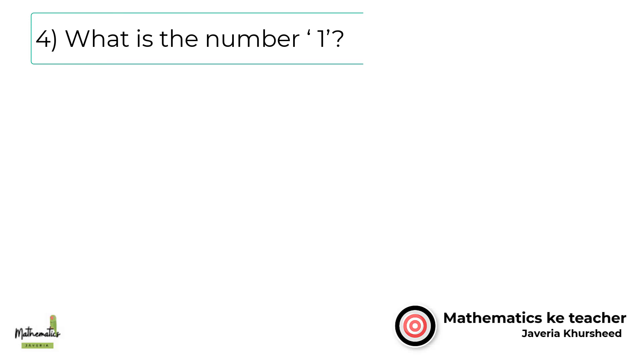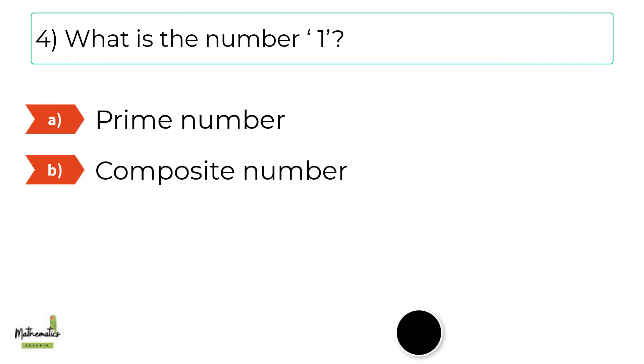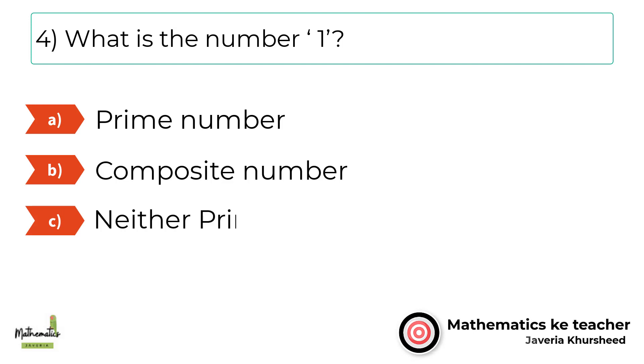Number 4. What is the number one? A, prime number. B, composite number. C, neither prime nor composite. D, none of these.